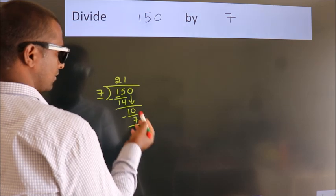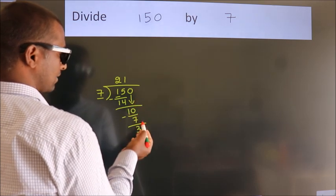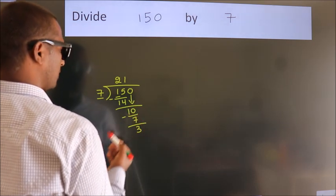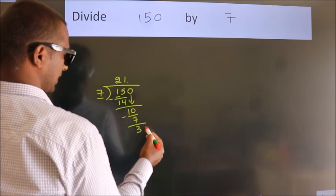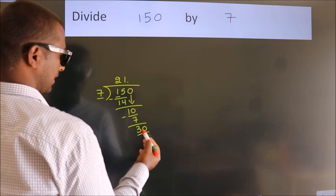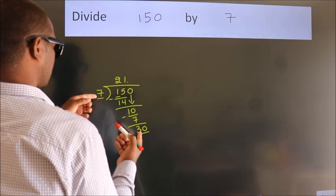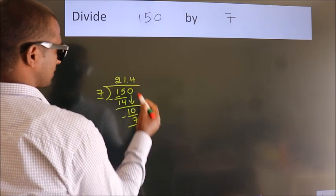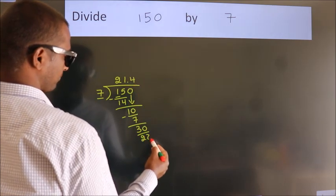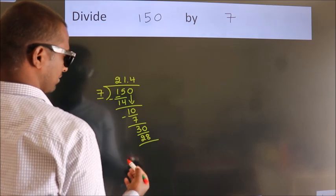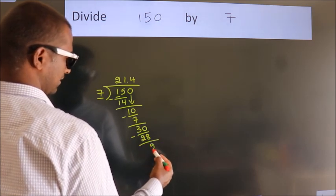After this, no more numbers to bring down. So what we do is put a dot and take 0, giving us 30. A number close to 30 in the 7 table is 7 fours, 28. Now we subtract and get 2.